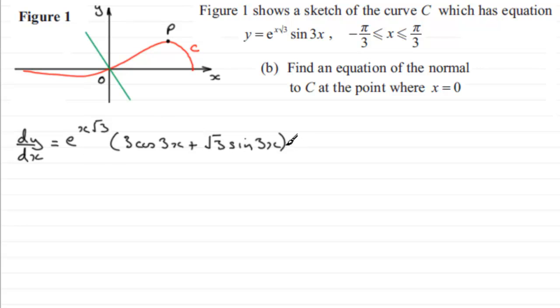Now if we get the gradient of the tangent at this point, at the origin, we just need to look at what dy/dx is when x equals 0. So when x equals 0, dy/dx is going to equal e^0 times...